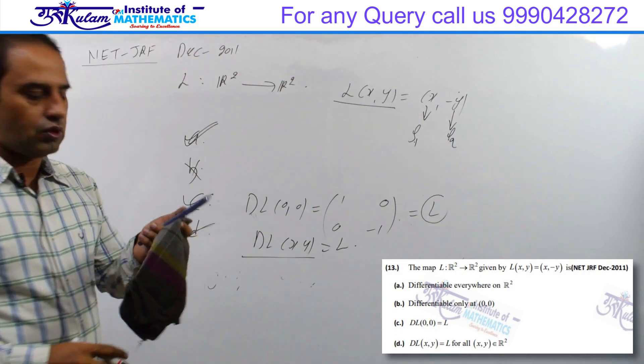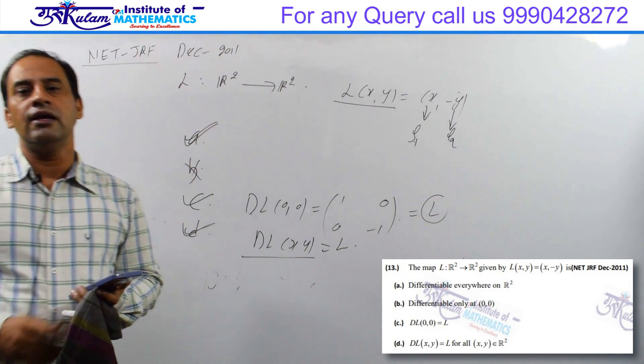So the C option is true, D option is true. D of L at X,Y is the matrix which is the linear transformation, which is the derivative, which is L. So the answer should be A, C and D. Clear?